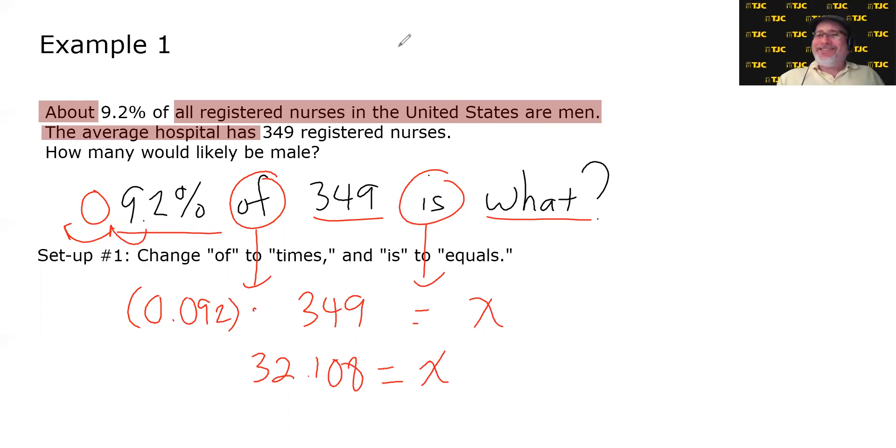But does that make sense in the context? Mathematically speaking, it's the correct value, but contextually, this represents male nurses in this hospital, and we can't have a decimal number of male nurses. So the reasonable answer would be to round this, and the answer is about 32 male nurses.